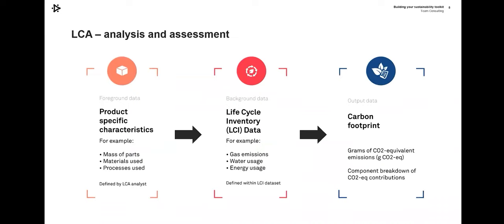We now move on to the real heart of the analysis process — phases two and three of the assessment. We look at the foreground data: the product-specific characteristics. For many products this is the real meat of it — the mass of the parts, the materials used, the processes used. That is defined by us as we go through the process of understanding a product. For some products that can be very simple — standard materials, standard parts. For others it may be more complex, with unusual processes involved.